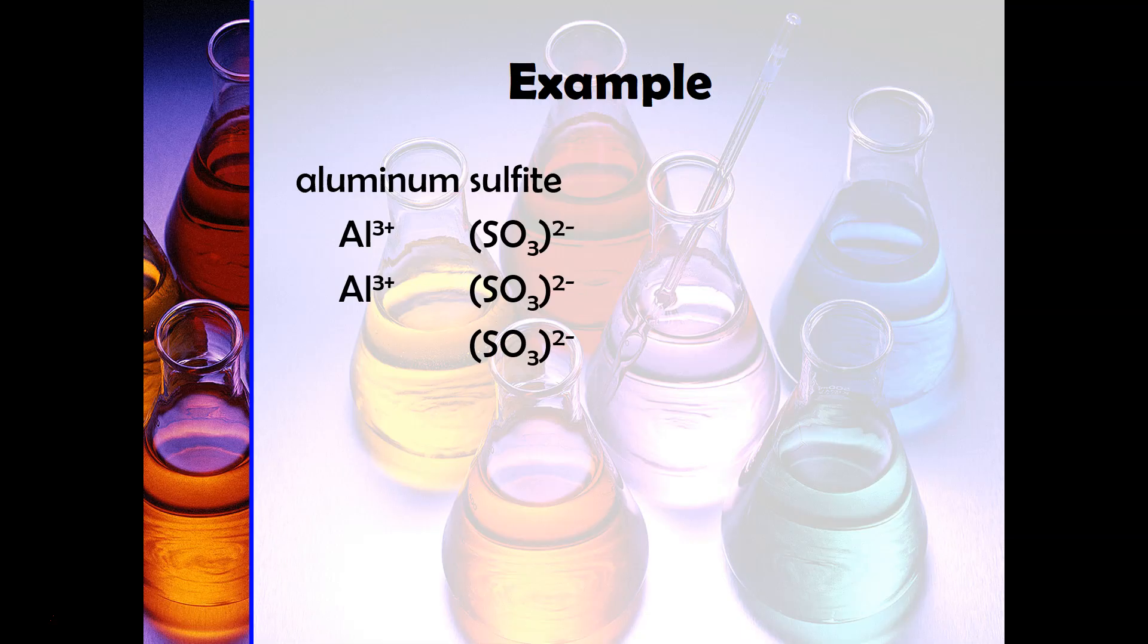You see that you have two aluminums and three sulfites. You have to be careful here though because you need the parentheses around SO3. Those parentheses indicate that you're going to have three of those SO3 polyatomic ions. It's almost like the distributive property in math class in that this 3 goes to the oxygen and also goes to the sulfur. You want to make sure that you always put parentheses around your polyatomic ions whenever you have more than one.